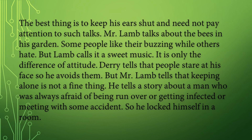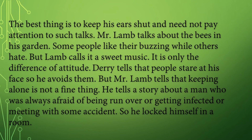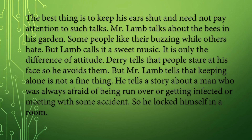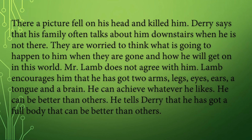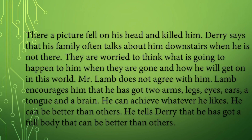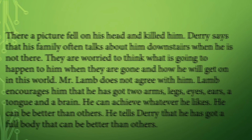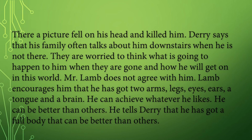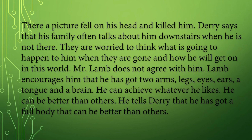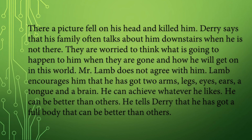Derry tells that people stare at his face so he avoids them. But Mr. Lamb tells that keeping alone is not a fine thing. He tells a story about a man who was always afraid of being run over, getting infected, or meeting with some accident — so he locked himself in a room. There was a picture that fell on his head and killed him inside the room. Derry says that his family often talks about him downstairs when he is not there, worried about what will happen to him when they are gone. Mr. Lamb encourages him, saying he has got two arms, legs, eyes, ears, a tongue and a brain, and he can achieve whatever he likes and can be better than others.